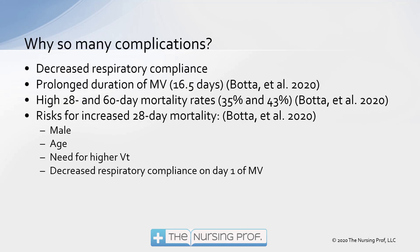So why so many complications? Starting with the respiratory system, we have decreased respiratory compliance as a result of having this infection. Prolonged mechanical ventilation — the duration is on average 16 and a half days. That's really long. We don't like to have people ventilated over two weeks. That's a long time to have somebody on a ventilator. What's happening with COVID is that patients are not turning around their respiratory status quickly enough to be taken off the ventilator, and that's tying up ICU beds for a long period of time.